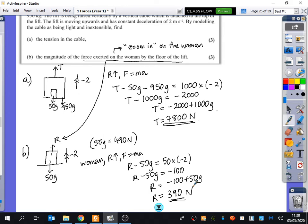So she's feeling in her legs a normal reaction of 390. Normally, when she's just stood still, her legs feel a normal reaction of 490. Which explains why when you go up in a lift and it starts to decelerate, that's why you feel weightless. Because your legs are feeling a force that they're not used to. They're normally used to feeling 490 Newtons. And now they're feeling 390 Newtons. And that's telling your brain, whoa, have I suddenly lost loads of weight? No, your normal reaction has actually changed there.